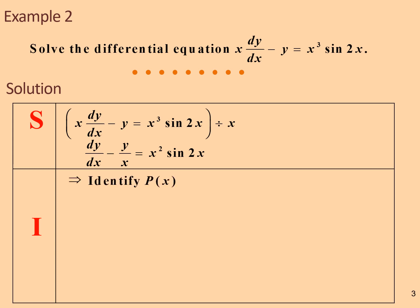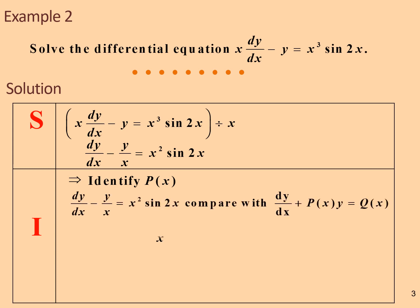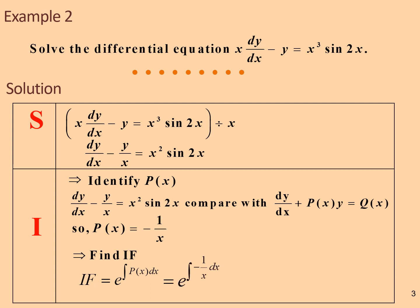I identify function P(x) from the equation. So we know that function P(x) equal negative 1 over x. Find the integrating factor by using the formula given, and we get 1 over x.